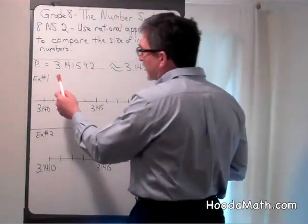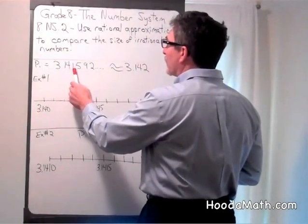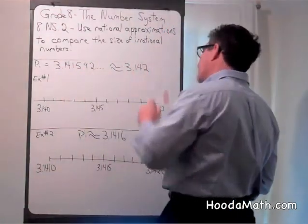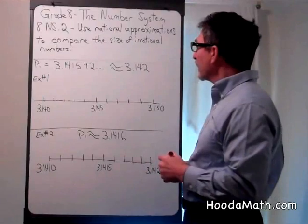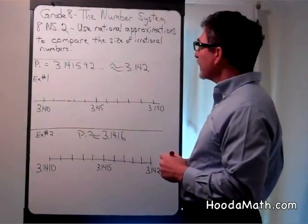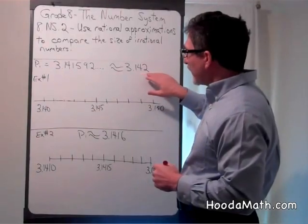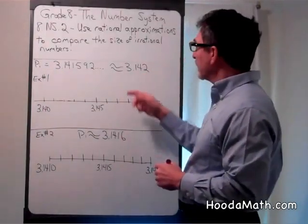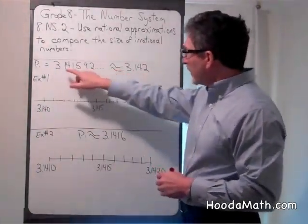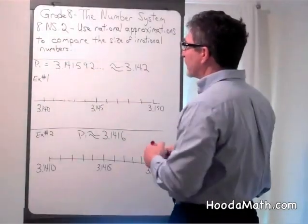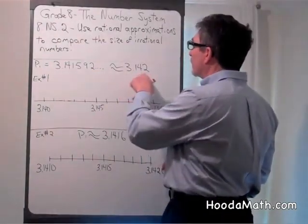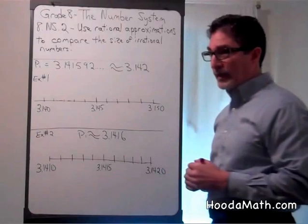Well, pi equals approximately 3.141592, and then it goes on. It's an irrational number. However, we can locate it to the nearest thousandth on this number line. So we've changed this to the nearest thousandth. We've rounded to 3.142 thousandths.